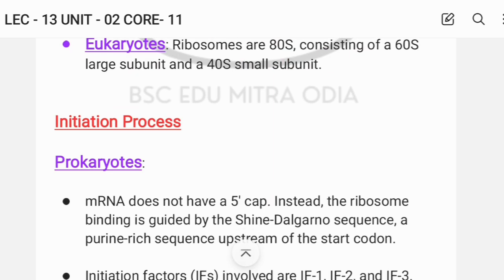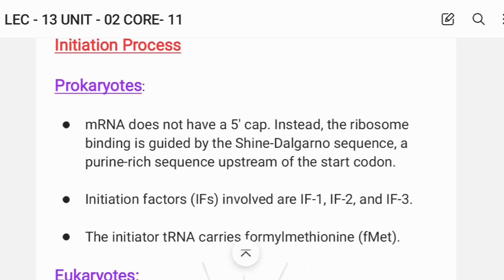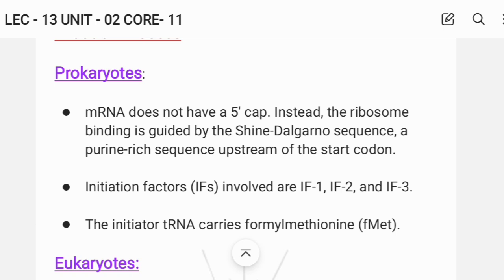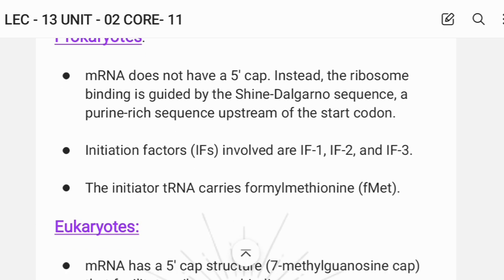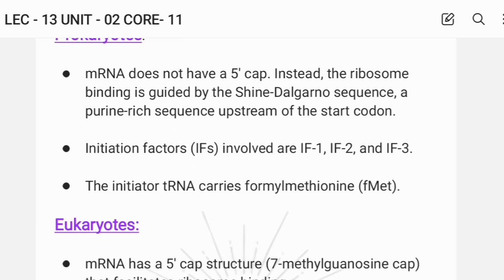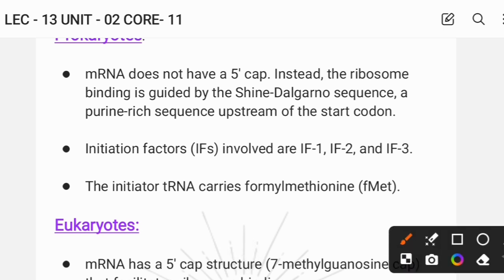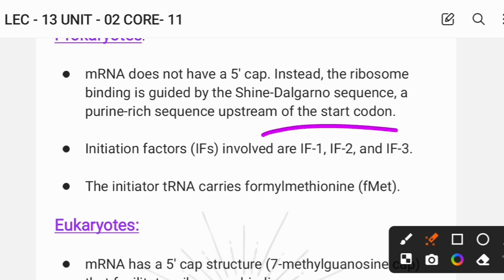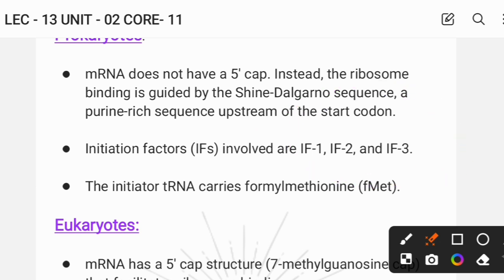Let me proceed to the initiation process. If you compare the initiation process in prokaryotes, then you don't have 5-prime capping. Instead, the ribosome locates the Shine-Dalgarno sequence and finds the start codon. You can find initiation factor 1, initiation factor 2, and initiation factor 3 in prokaryotes.